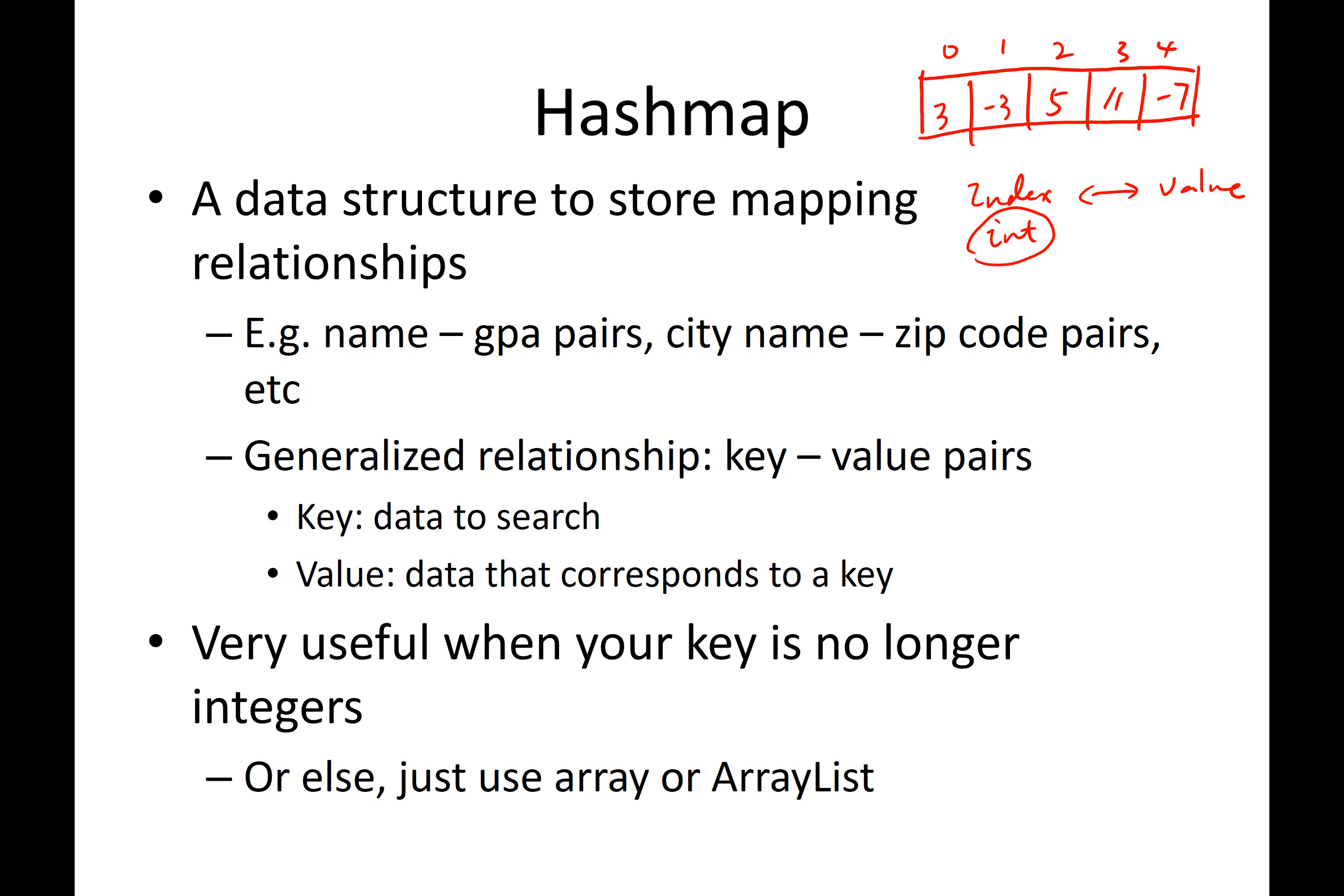For example, if I want to store the data for name and GPA pairs. So for Paul, the GPA is 4.0. For record, the GPA is 1.0. So if we look at the mapping, it is basically a mapping between a string and a double. Similarly, for the city name, city name can be a string. And zip code, you can treat it as a string. So this may be a string-to-string relationship.